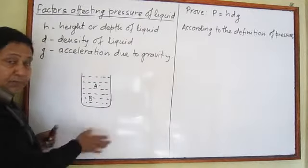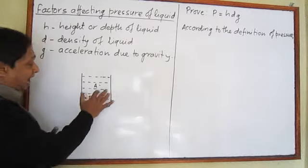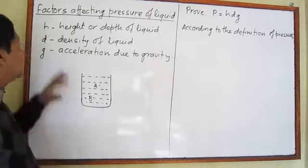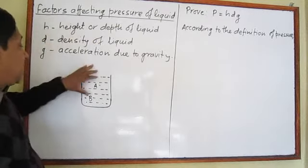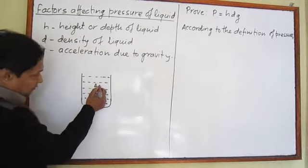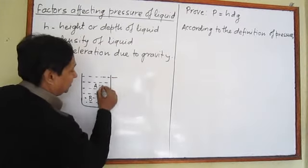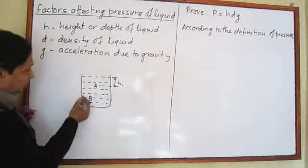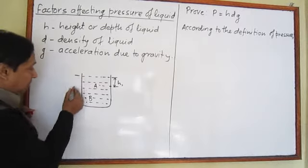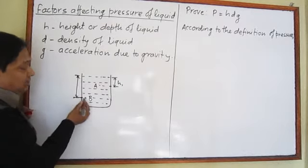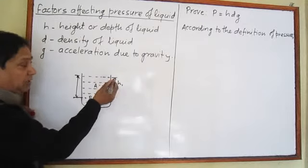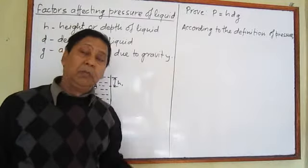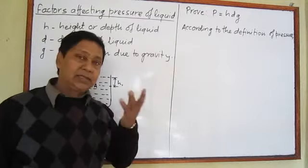Look at this simple representation: a beaker is taken and filled with a liquid, let's say water, and two points are selected, A and B. Point A lies at less depth from the surface of the liquid, but point B lies at greater depth. Since point B lies at greater depth, pressure at point B will be more and at point A will be less. More the depth, more the pressure; less the depth, less the pressure.